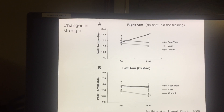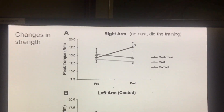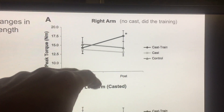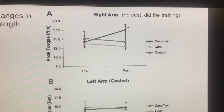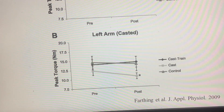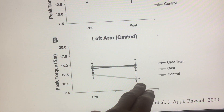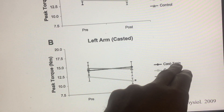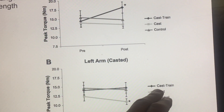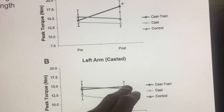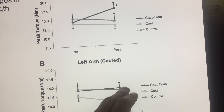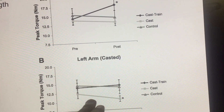This graph shows strength changes over three weeks. The top graph shows the right arm that did all the training — as expected, the trained group had an increase in right arm strength, while the other groups had hardly any change. The interesting result was the left casted arm: the group that was casted without training had a decrease in strength, whereas the group that was casted but trained the right arm had no change in strength. So training the uncasted arm prevented strength loss in the casted arm.